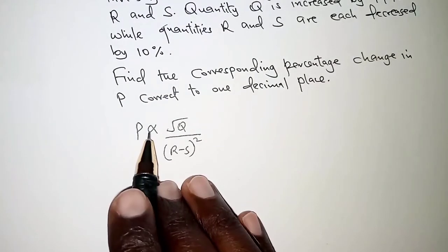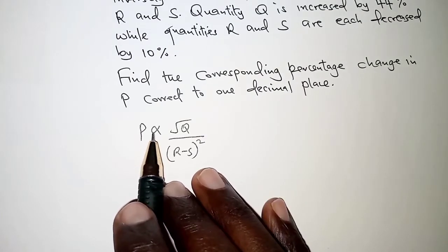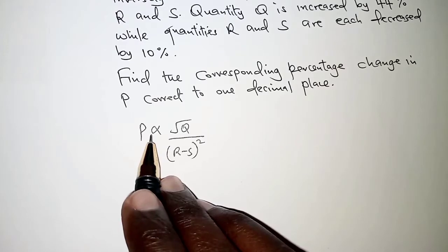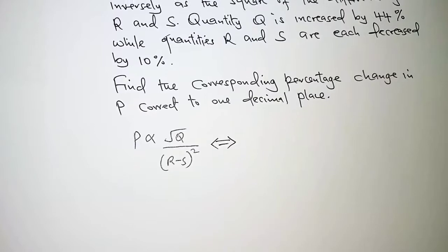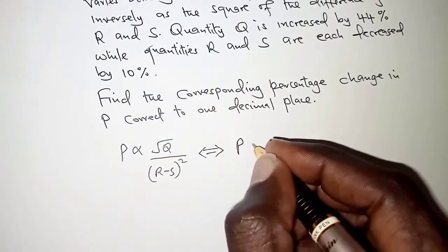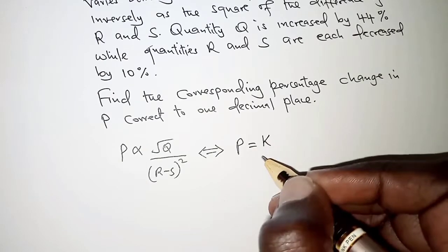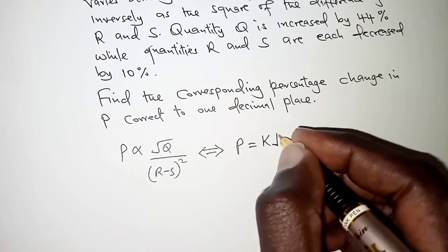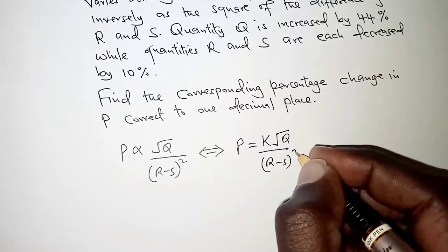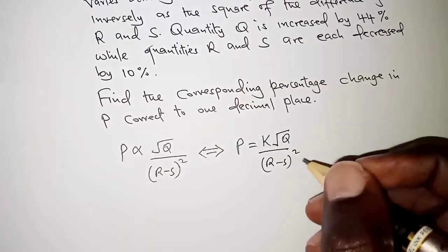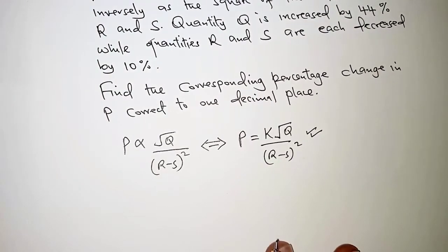This symbol here is a symbol for variation and is read as varies as. We can replace this symbol with an equal sign, and when we replace it with an equal sign we will simply have P is equal to K. So introduce a constant K, it can be any other letter of your choice. So K root Q all over R minus S squared. This is what P is before any changes are made.